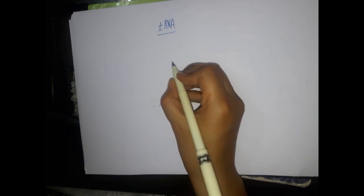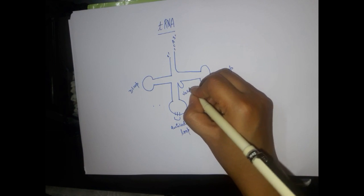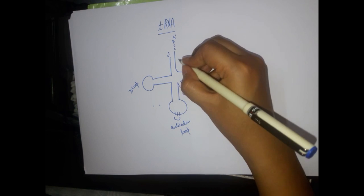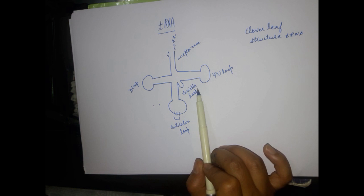Now let's look at the structure of tRNA. This structure is known as the cloverleaf structure of tRNA. It has four different loops: the D loop, the pseudouridine loop, the anticodon loop, and the variable loop. These tRNAs act as adapters between the codons of the mRNA and the amino acids.